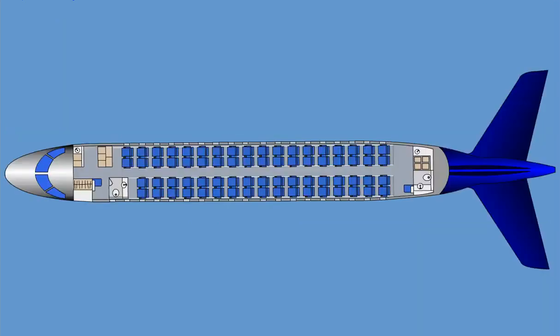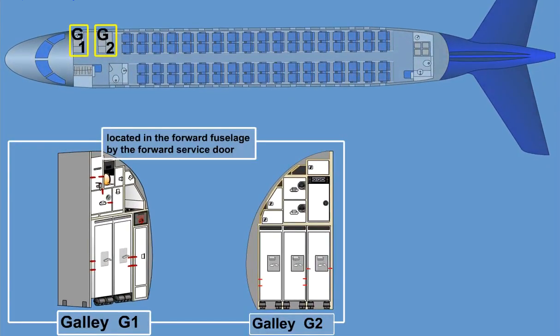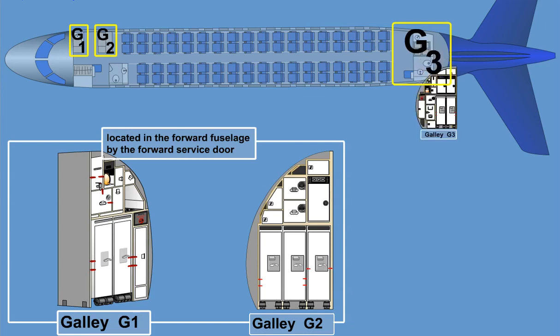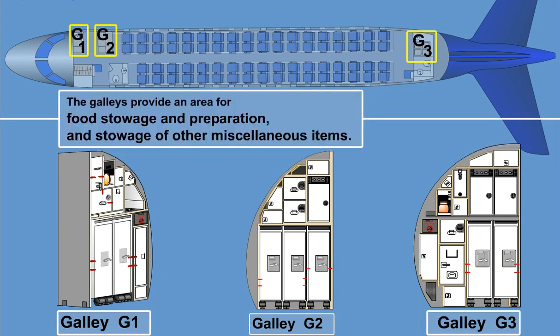The airplane has provisions for three galleys. G1 and G2 are located in the forward fuselage by the forward service door. G3 is located in the aft fuselage adjacent to the aft service door. The galleys provide an area for food storage and preparation and stowage of other miscellaneous items.